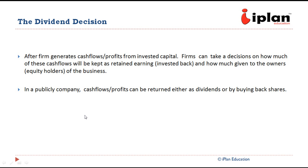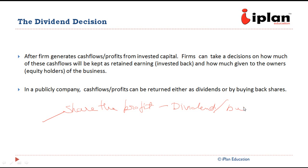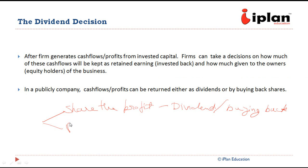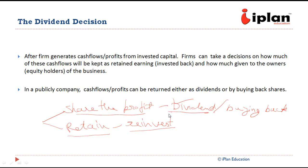And finally, the dividend decision. When a company makes profit, it has two choices. One, it can share the profit with shareholders in terms of dividend or by buying back shares. The second option is to retain the profit and reinvest. For reinvesting, we need to have some viable and profitable projects. In case we do not have any such projects in mind, the best option is to share the profit or pay dividend to the stakeholders.